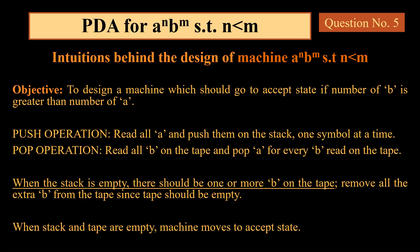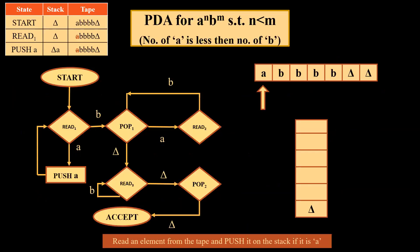Since the accept condition requires both tape and stack to be empty, we need to remove all extra b's from the tape. We keep reading b's until we reach the end of the tape, which is delta. When the tape is empty and the stack is empty, the machine moves to the accept state. This is the machine for aⁿbᵐ such that n is less than m.